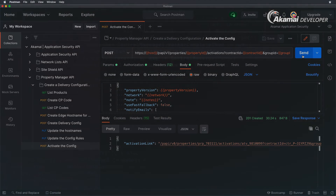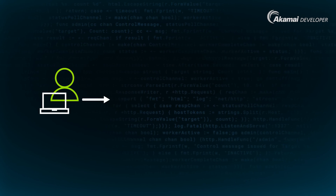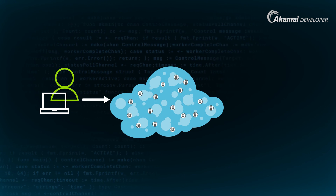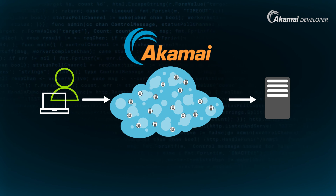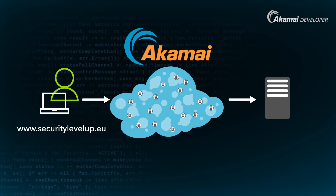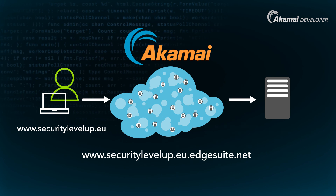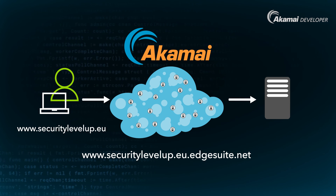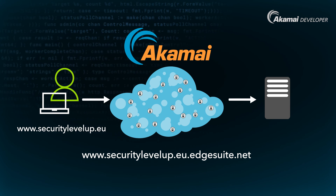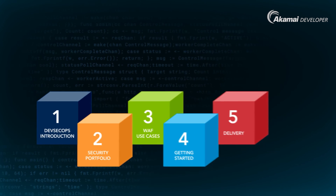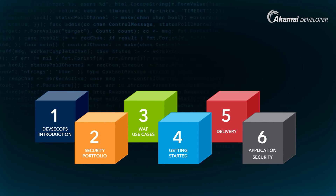We've created our Akamai Ion configuration — Akamai's flagship web performance product. By having activated this, our hostname www.securitylevelup.eu can now be tested to see how it behaves behind the Akamai platform, and we can continue and add in our application security settings by creating an application security configuration. I hope this video has been helpful to you — I look forward to seeing you in our other videos. Thank you very much for watching, and happy Akamai'ing!